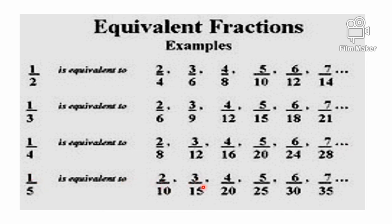1/5 is equivalent to 2/10, 3/15, 4/20, 5/25, 6/30, 7/35, and so on. So these are the equivalent fractions of the given data.